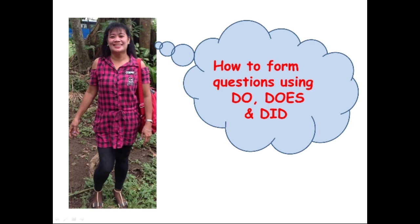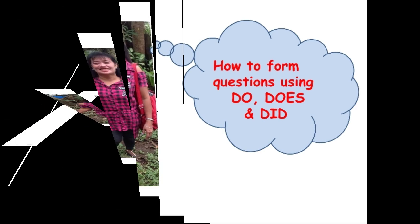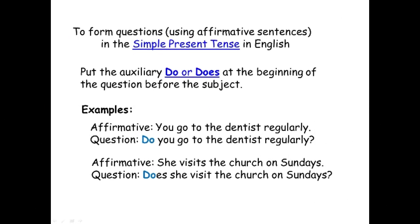So for today, let us watch and listen. To form questions using affirmative sentences in the simple present tense in English, put the auxiliary do or does at the beginning of the question, before the subject. Here are examples.